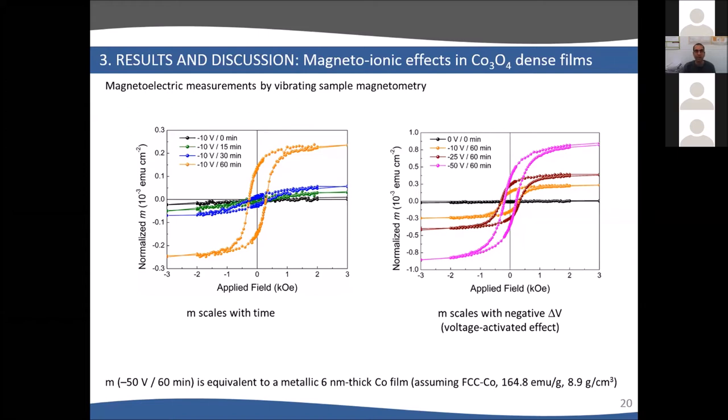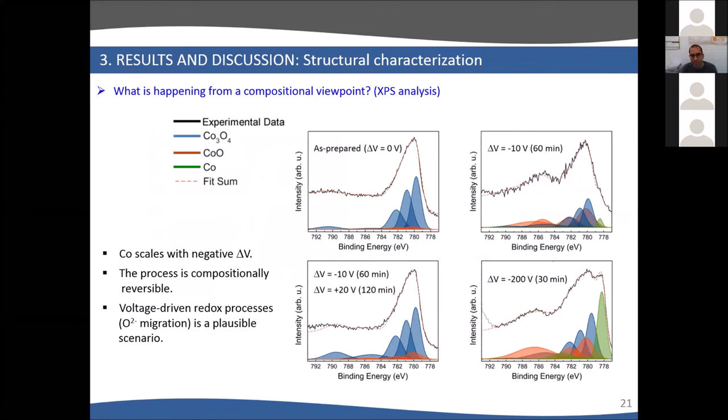To confirm this, we performed structural characterization. First, XPS. You can see the as-prepared material at 0 volt is basically cobalt 3O4 with some residues of cobalt monoxide. After applying minus 10 volts for one hour, this broad peak becomes even broader, which can be ascribed to formation of metallic cobalt. If we apply positive voltage for two hours, this broad peak becomes narrower again, the cobalt contribution disappears. If we apply very large negative voltage for half an hour, you see a split of this peak because we have a lot of metallic cobalt being formed.